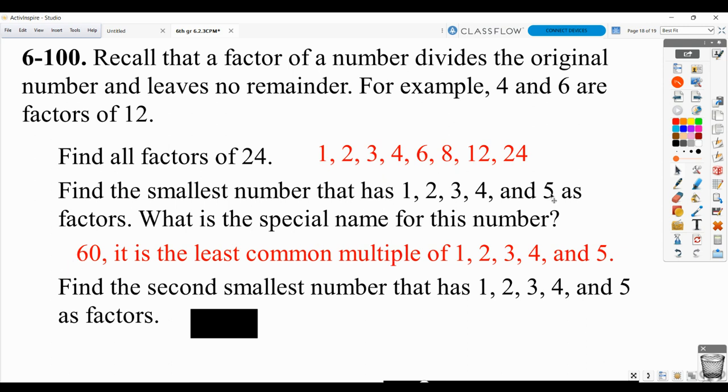Now, how do you get the 60? You could make a list of the multiples and find that it's the smallest one. There's certainly other ways you could approach it as well. You could use prime factorization. You could reason it out. The second smallest number that has these as factors. Well, if 60 is the least common multiple, then we can multiply that by 2 to get the next common multiple, 120.